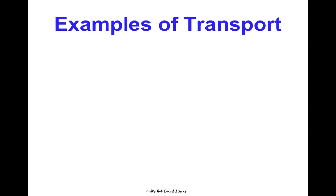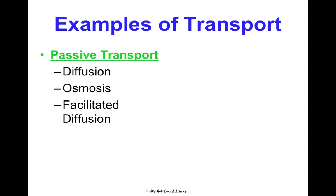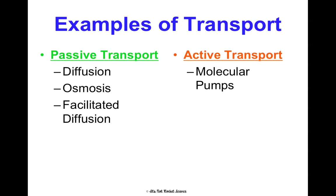There are three examples of each type of transport. Passive transport includes diffusion, osmosis, and facilitated diffusion. Active transport includes molecular pumps, exocytosis, and endocytosis.